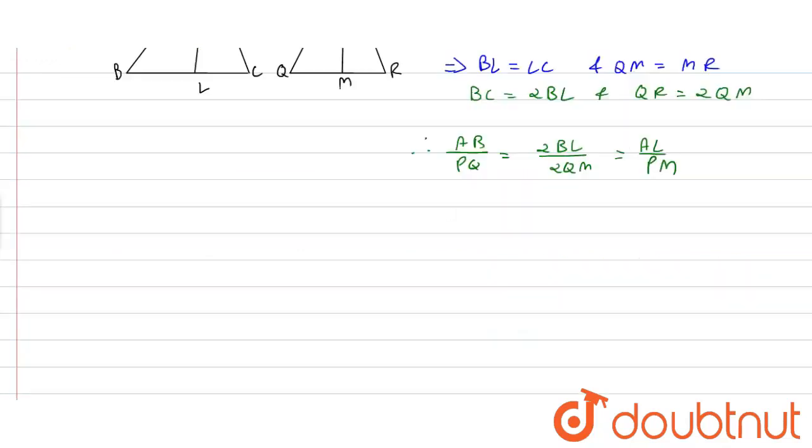By solving this we can write AB upon PQ is equal to BL upon QM is equal to AL upon PM.